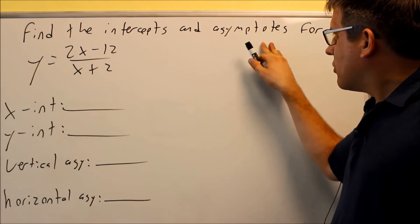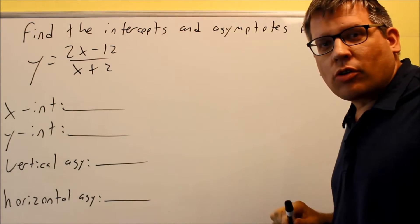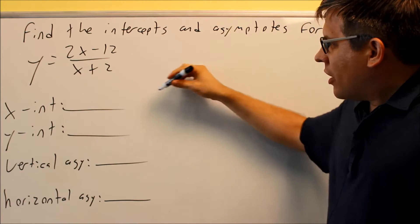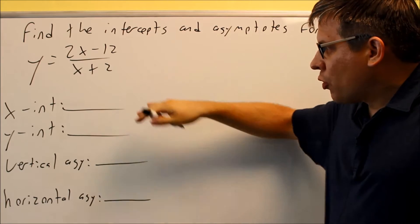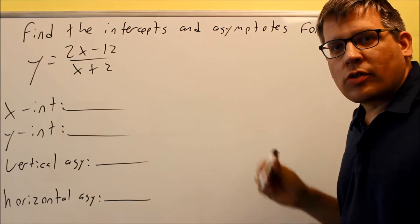Okay, we want to find the intercepts and the asymptotes, and this is the function that we're going to be looking at. We want to find, for the rational functions, there's different rules for finding the x-intercept and the y-intercept. First of all, for x-intercept...